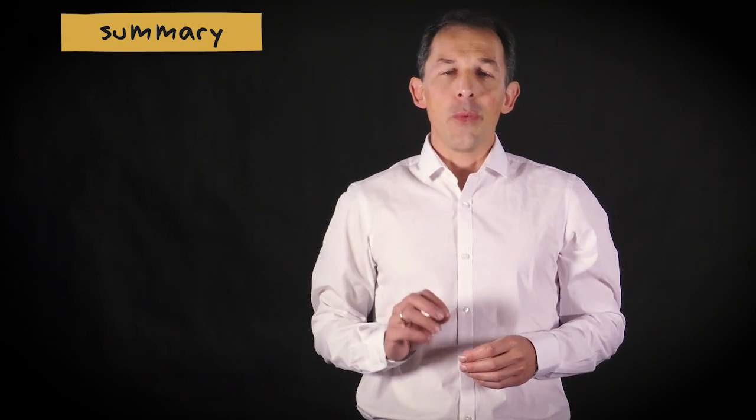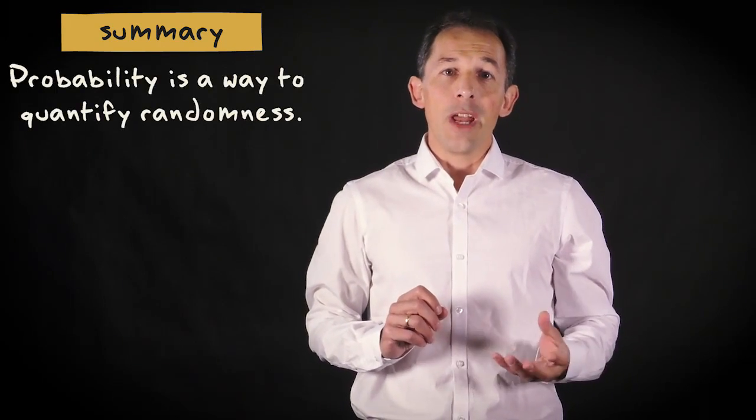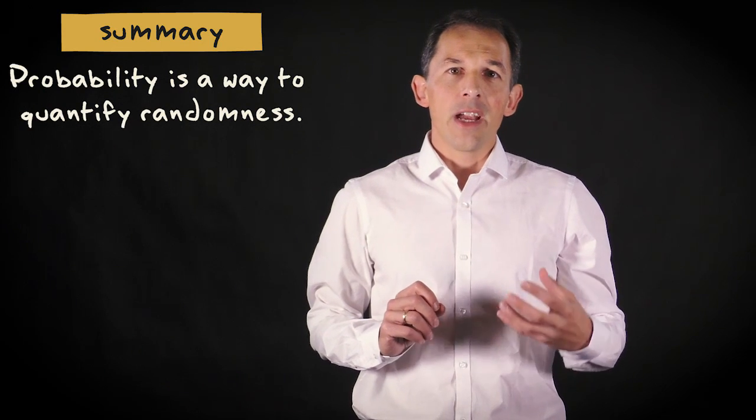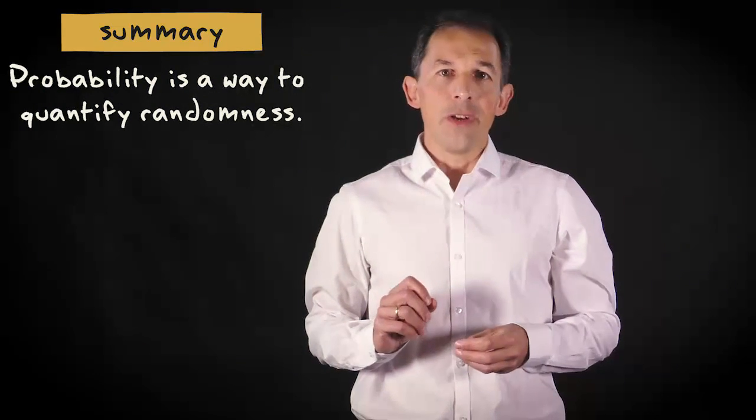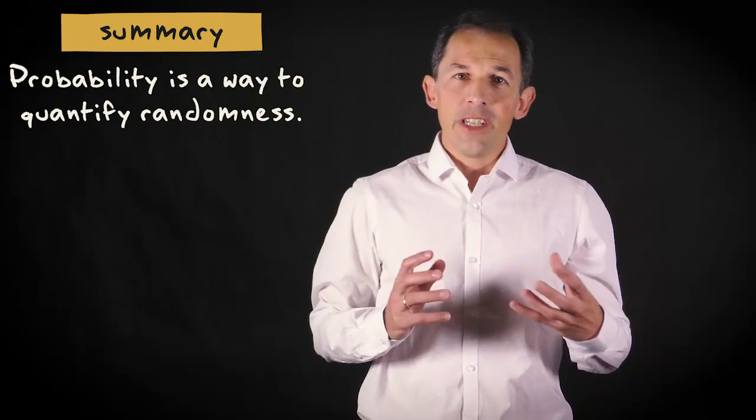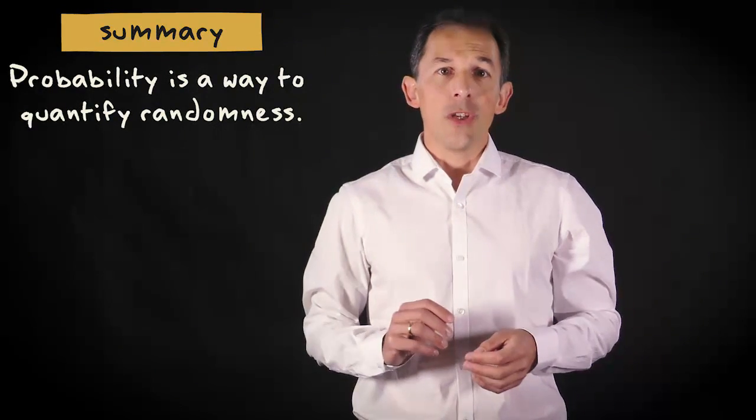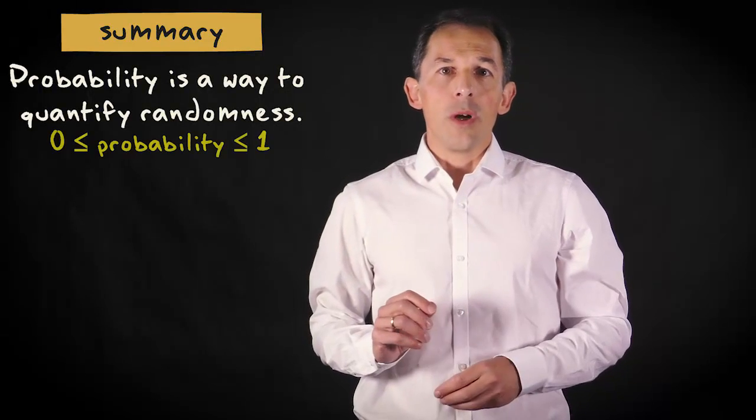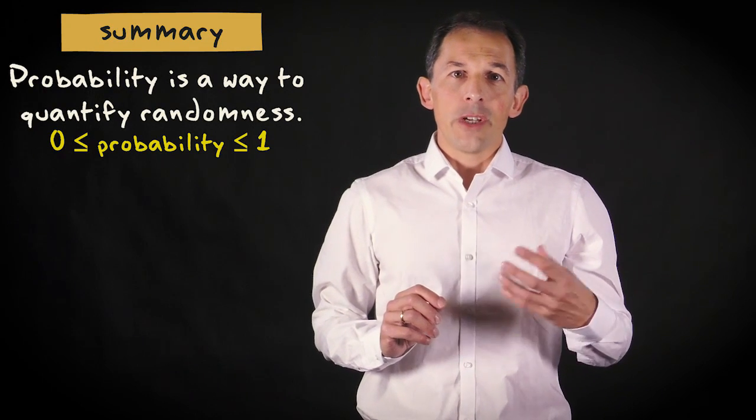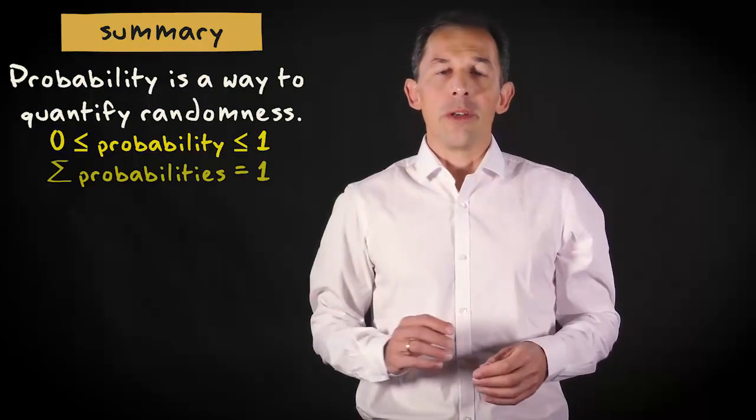Let me summarize what I hope you understood from this video. Probability is a way to quantify randomness. It can be expressed by means of relative frequencies. From this definition, it follows that probabilities are always larger or equal to 0 and smaller or equal to 1. And also that the sum of the probabilities for all possible events equals 1.